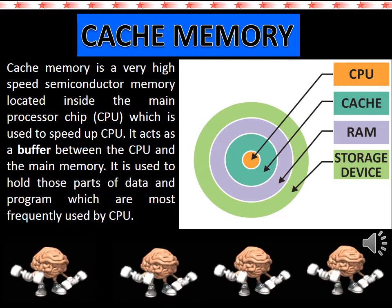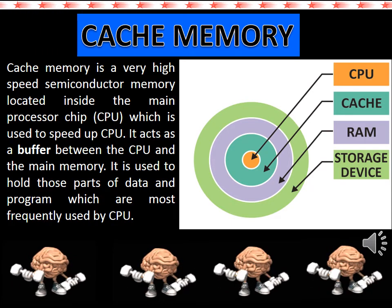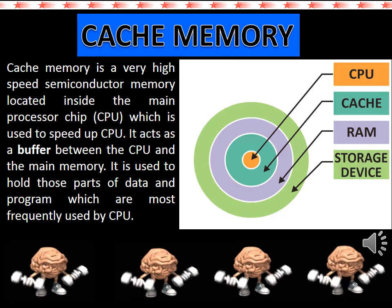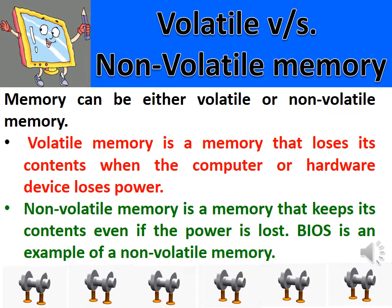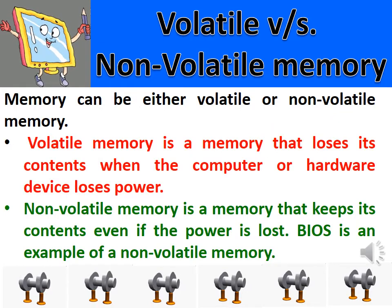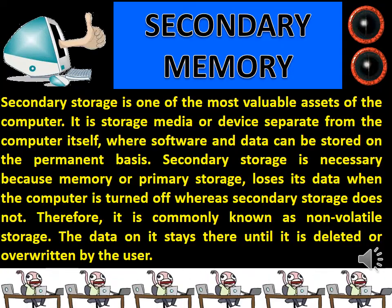Cache memory is a very high-speed semiconductor memory located inside the main processor chip, which is used to speed up the CPU. It acts as a buffer between the CPU and the main memory, and is used to hold those parts of data and programs which are most frequently used by the CPU. Memory can be either volatile or non-volatile. Volatile memory loses its content when the computer loses power, while non-volatile memory keeps its content even if the power is lost. BIOS is an example of non-volatile memory.